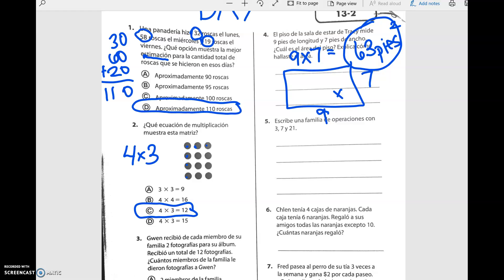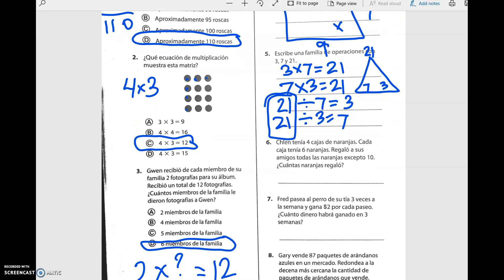Cinco escribe una familia de operaciones con tres, siete y veintiuno. Tres por siete es igual a veintiuno. Siete por tres es igual a veintiuno. Veintiuno dividido por siete es igual a tres. Veintiuno dividido por tres es igual a siete. And on some of your papers, I might also see a cute triangle with twenty-one at the top, seven and three. Just make sure that on these two, that twenty-one comes first, because that is the biggest number that we're going to have.